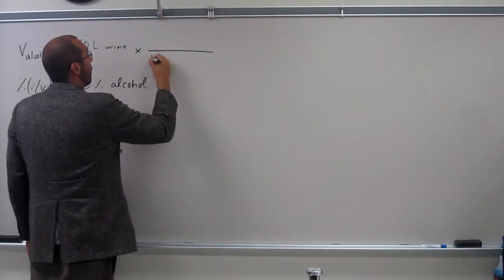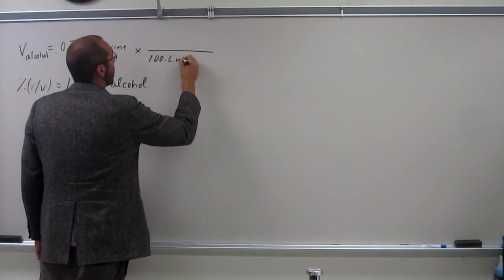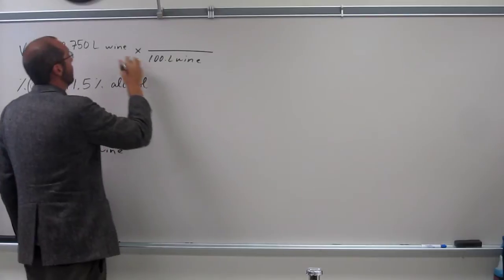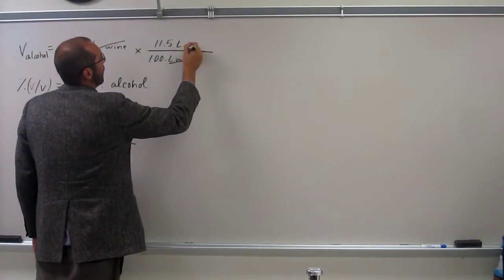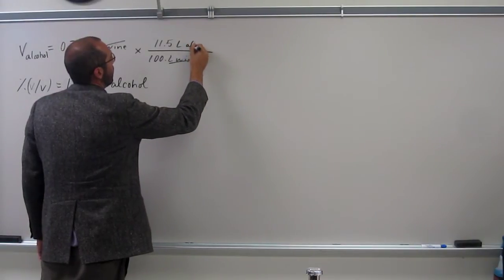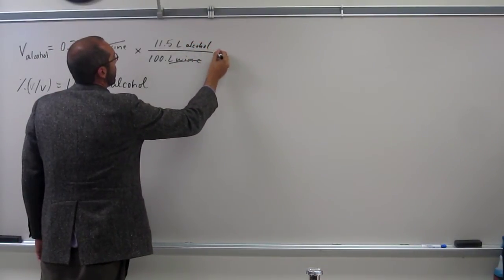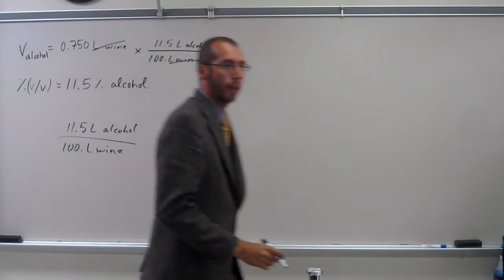So, 100 liters of wine on the bottom, so we can cancel that out, and 11.5 liters of alcohol on top. So, when we do that...